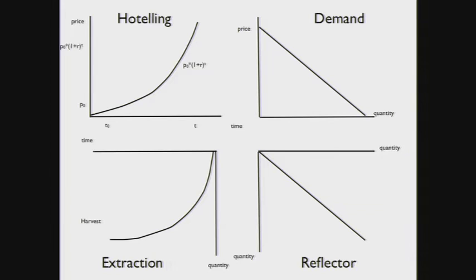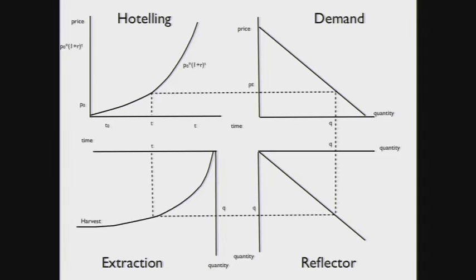The demand curve is simple - different prices give us different quantities. As prices rise over time, we start low on the demand curve selling a lot. Over time, the price gets higher and higher and less and less is sold. These quantities map to the extraction graph where we have time and quantity. This is the resource management question: how much should we extract each year?